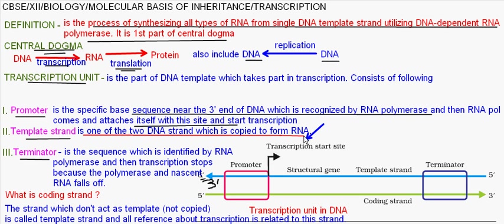The template strand is the DNA strand in the double-stranded DNA which is copied or transcribed to form the RNA. What is a terminator? It is again a specific sequence in the DNA template strand. This is identified by RNA polymerase and transcription stops, because the shape of this site is such that RNA polymerase as well as the nascent RNA — that is newly synthesized RNA — falls off from the template strand. This site is called the terminator.